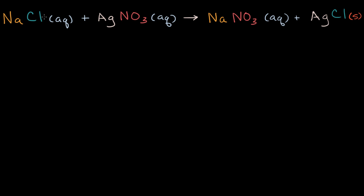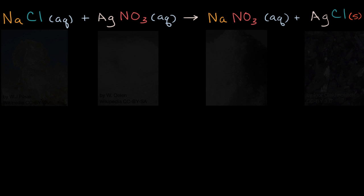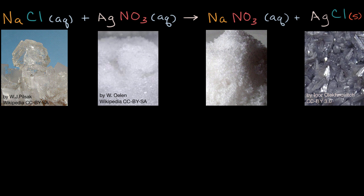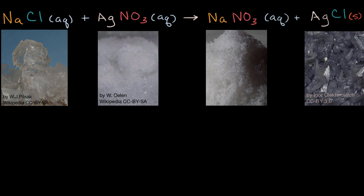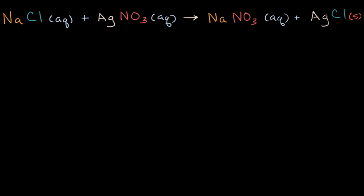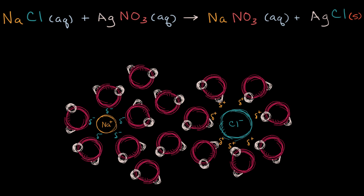If you were to look at each of these compounds in their crystalline or solid form before they're dissolved in water, they each look like this. But once dissolved in water — that's what the aqueous label tells us — they're no longer going to be in that crystalline form. Instead, you're going to have the individual ions dissociating.